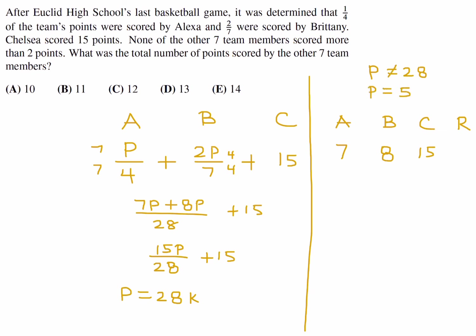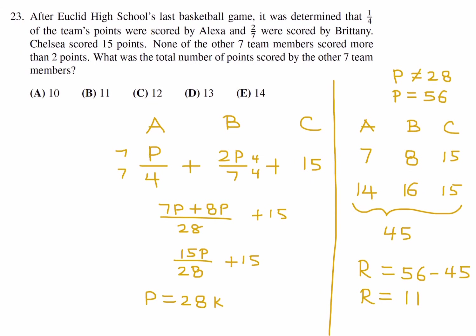Let's try the next multiple of 28, which is 56. If p is 56, then p over 4 would be 14. And then 2p over 7 would be 16. And c is fixed at 15. So, so far, what do I have here? I have 45. So that means r is equal to 56 minus 45. The rest of the team scored 56 minus 45, and that's 11. And that works out. So number 23, the answer is B.